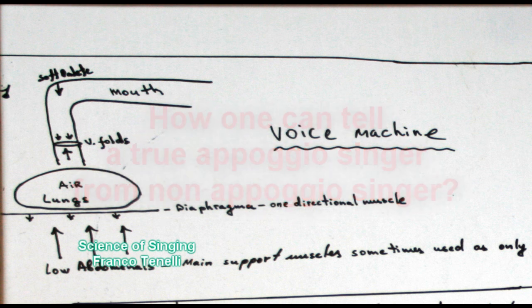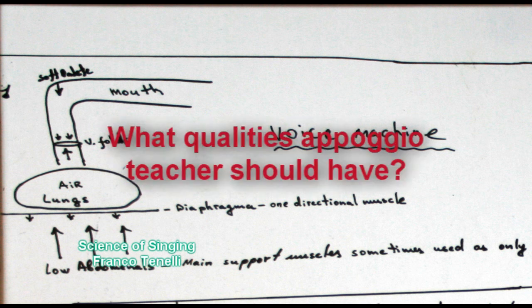That's a great question and let me start from the opposite. Let me say who is not an Appoggio singer. If you hear divisions in voice, then this is not an Appoggio singer. If you hear extreme nasality, it is not an Appoggio singer. If you hear forceful singing, this is not an Appoggio singer. If you hear obvious distortions of the vowels or covering technique, it is not an Appoggio singer.